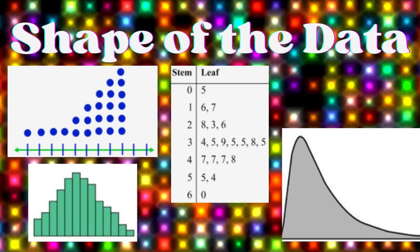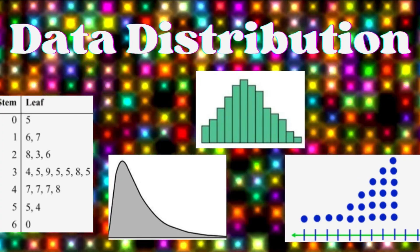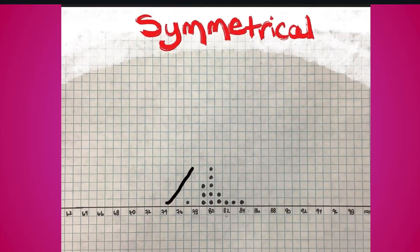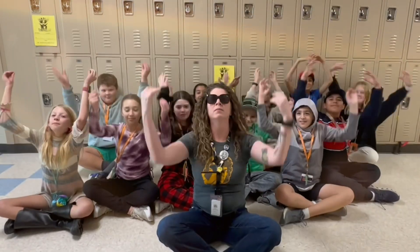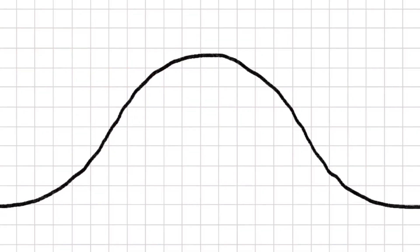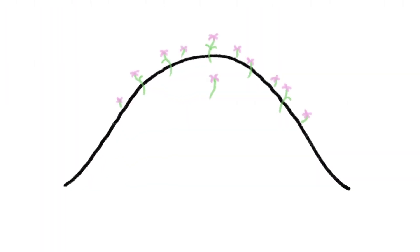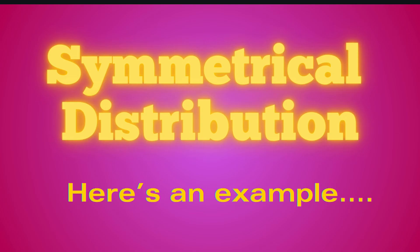Shape of the data, data distribution. When the data balance looks the same on both sides, like a mirror image — when that data balance is like a perfect tube, we call it symmetrical.